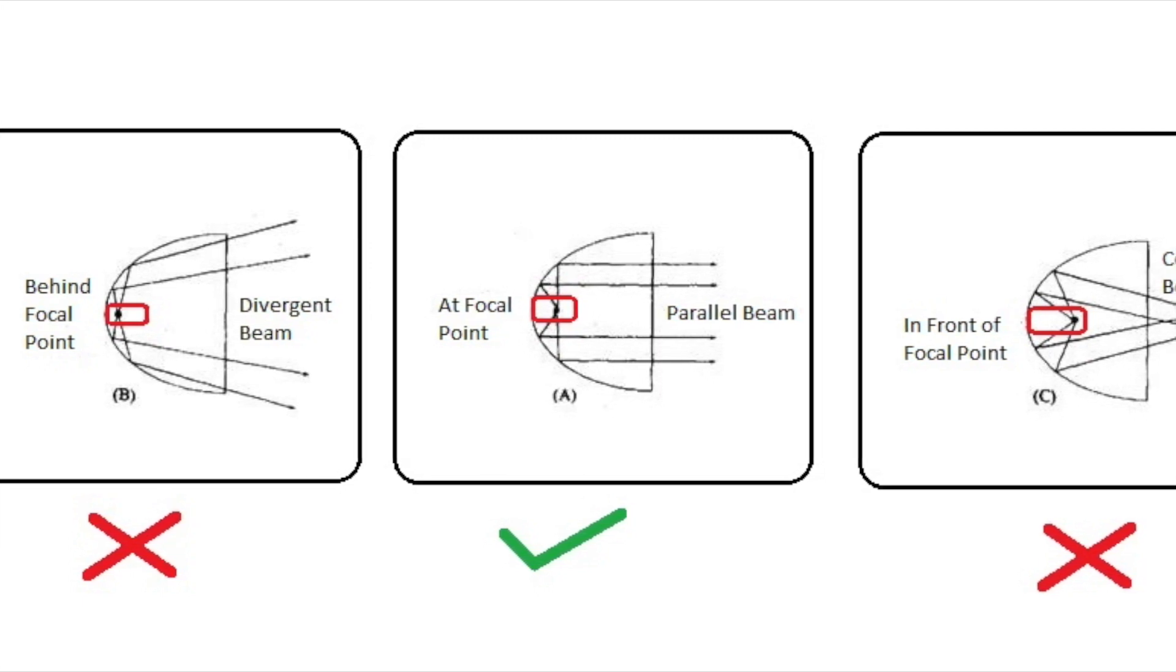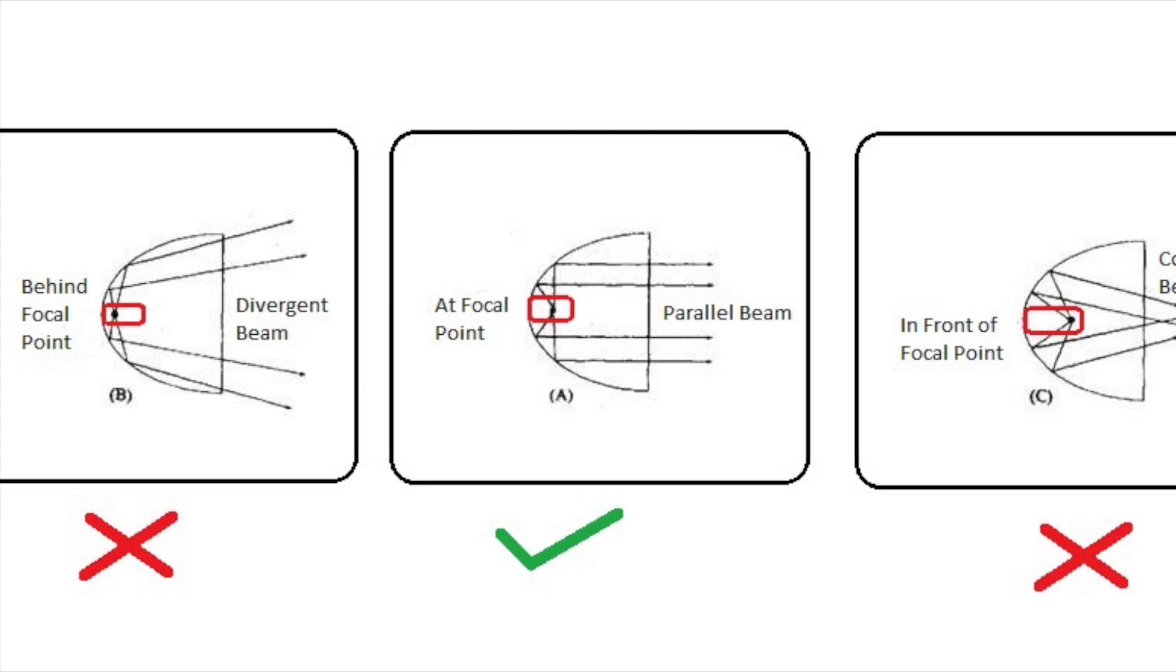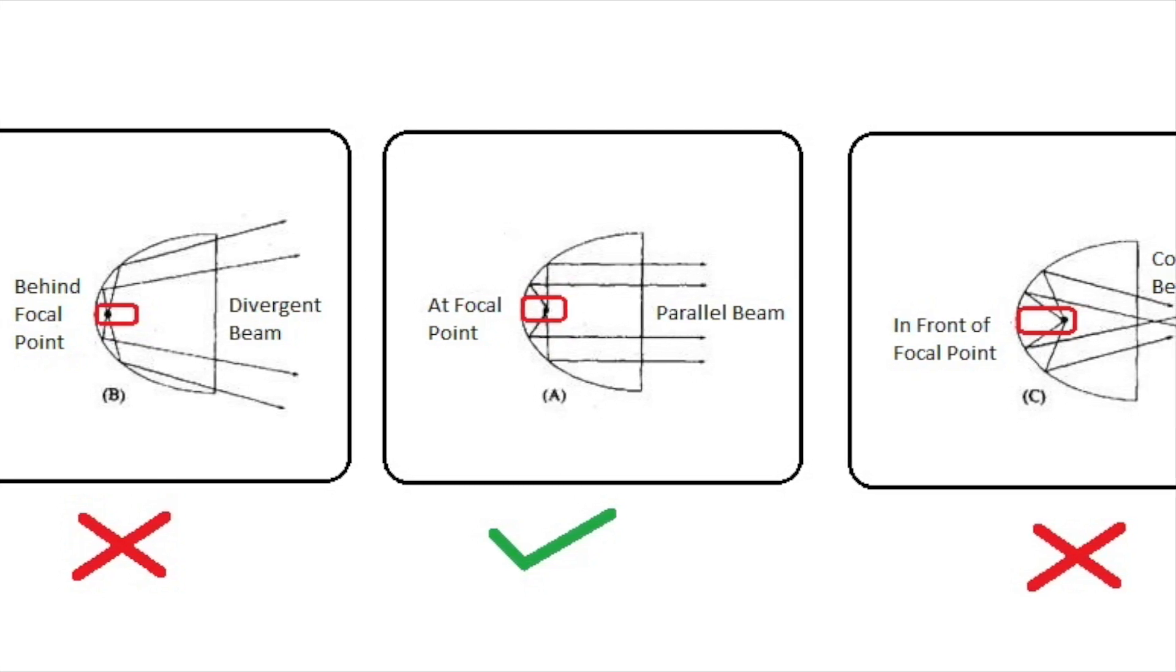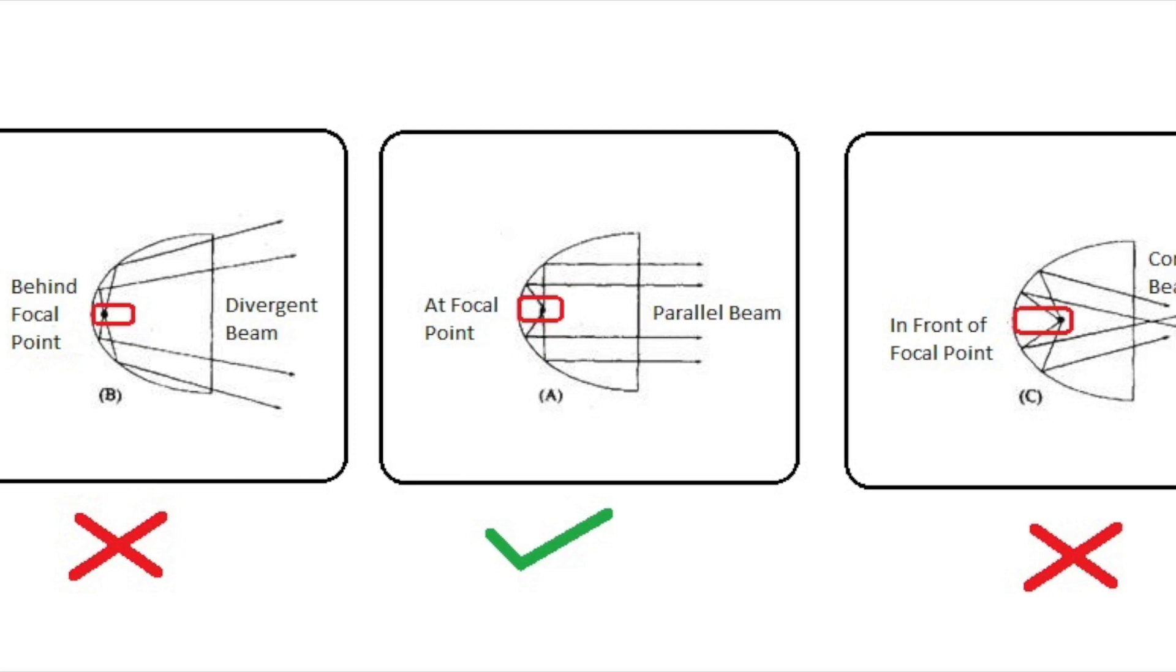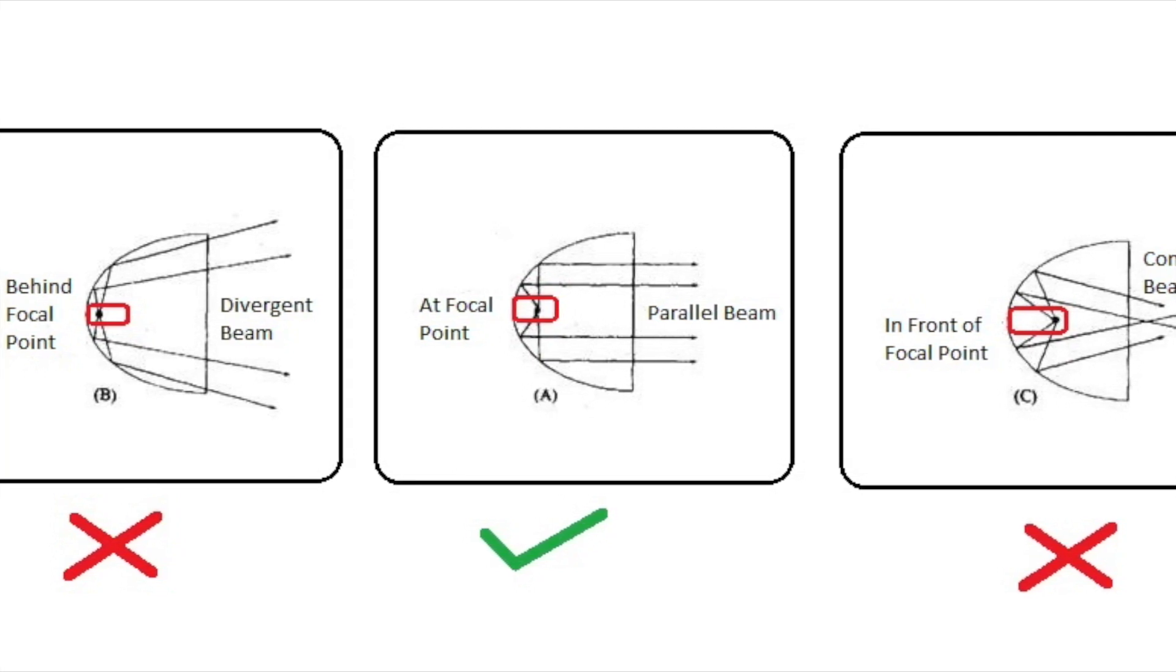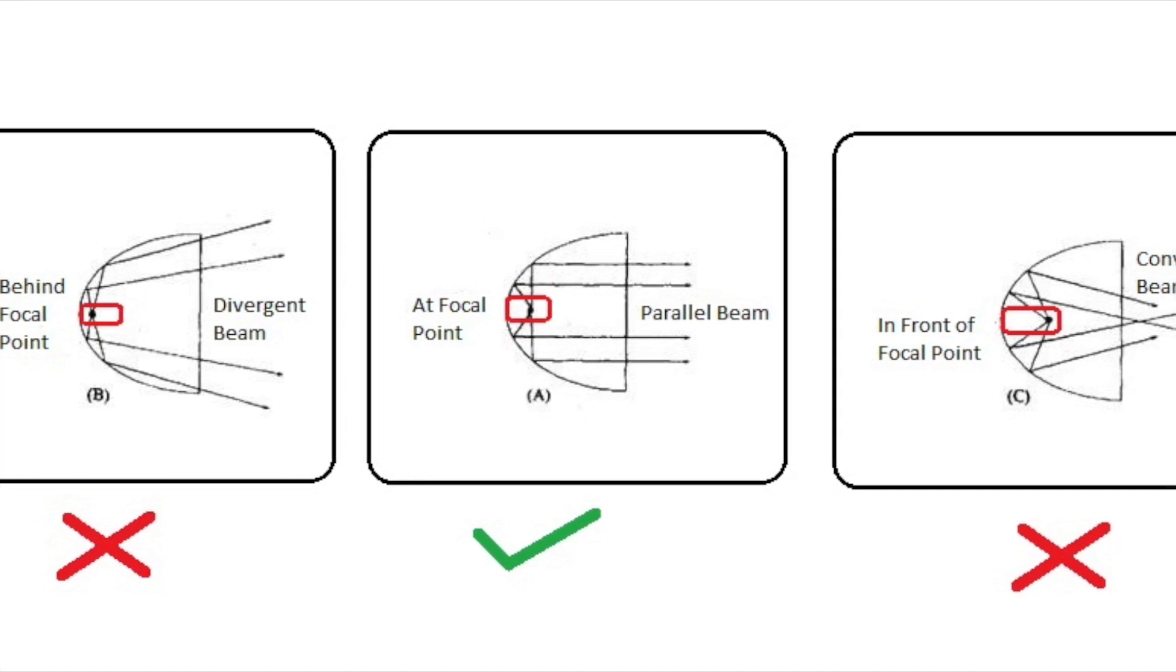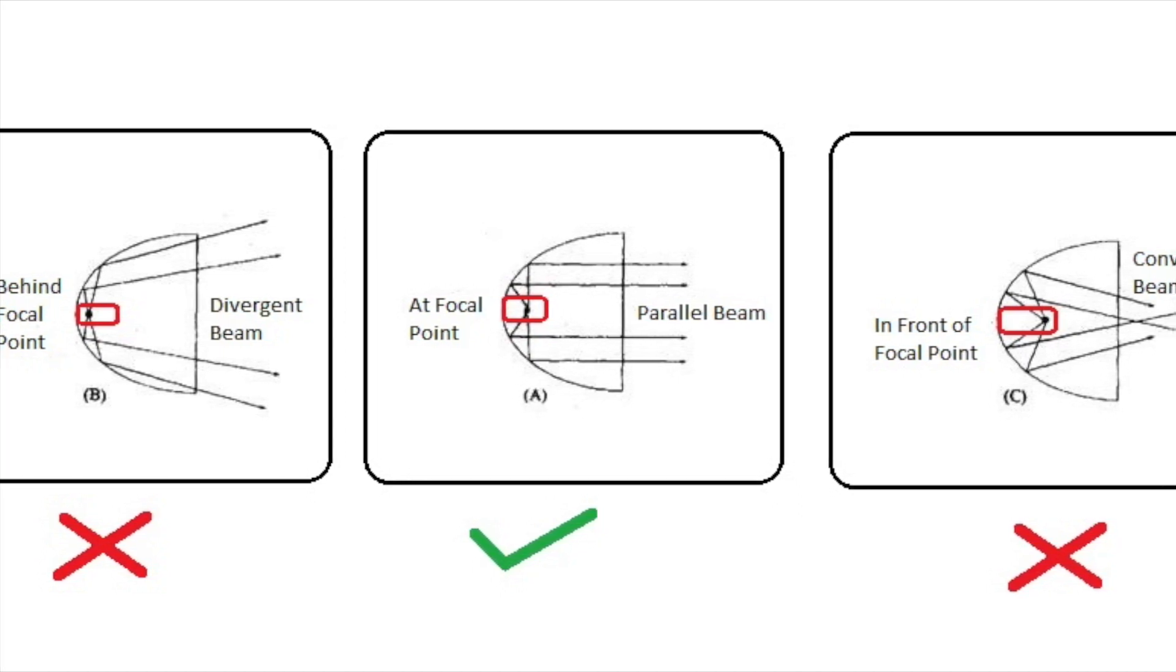In the extreme right image where we have the filament placed in front of the focal point, not at the focal point, it is getting reflected multiple times through the reflector and coming to one point, getting diverted so that it is not spreading in a proper way.